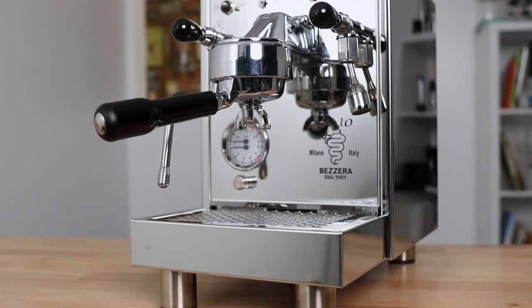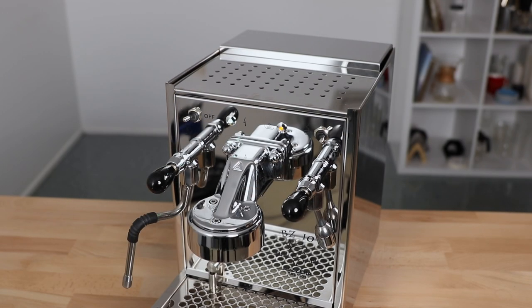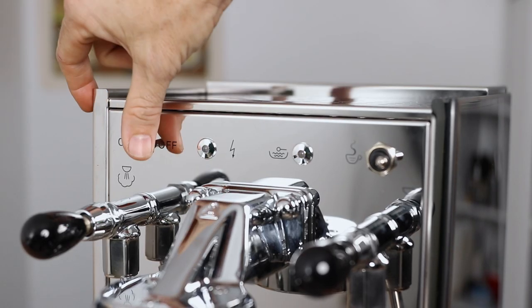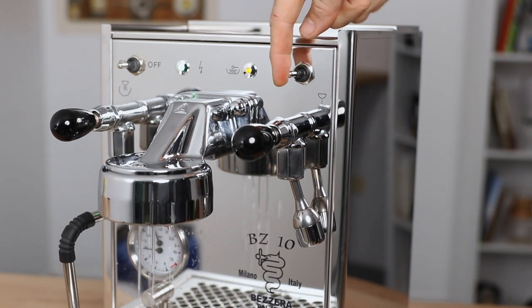And looking down at the front of the machine, there's a minimalist feel to the controls on the BZ10. Noticeably there's no PID or settings to manage, but an on and off switch on the far left and then your brew switch that controls the pump for brewing espresso on the right.